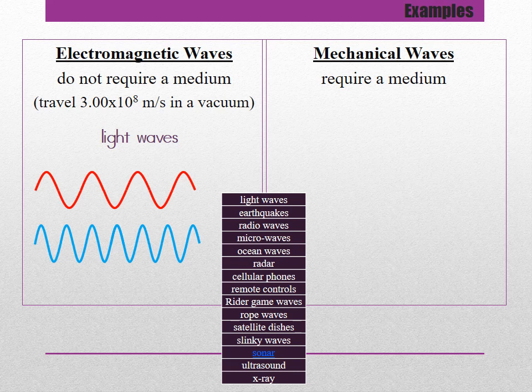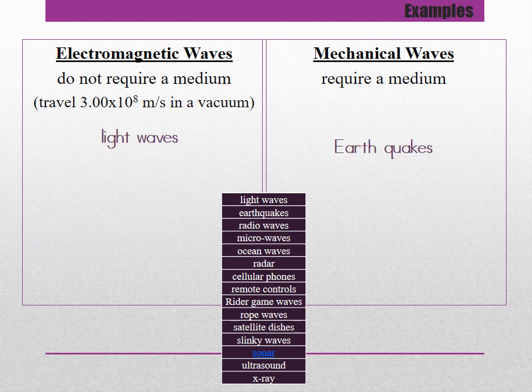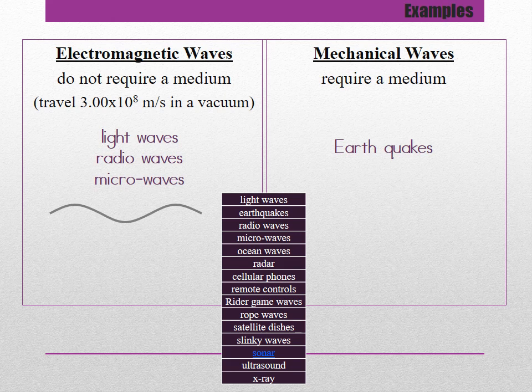The only difference between red light and blue light is that red light has a longer wavelength than blue light. Earthquakes are mechanical waves because you require earth in order to have an earthquake. Radio waves are electromagnetic waves — just like light waves except the wavelength is so long that our eyes cannot see them. Radio waves include FM and AM that we pick up in our car. Microwaves are shorter than radio waves but still longer than what people can see.